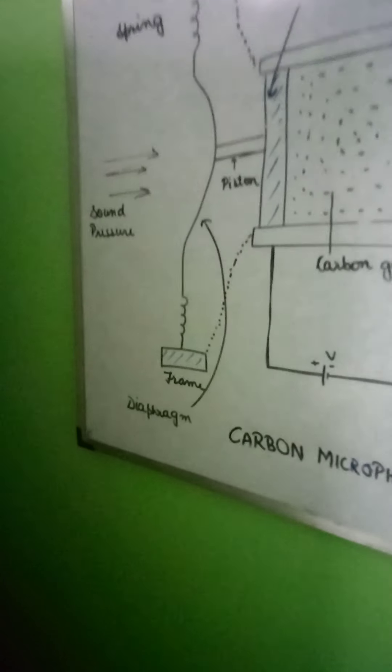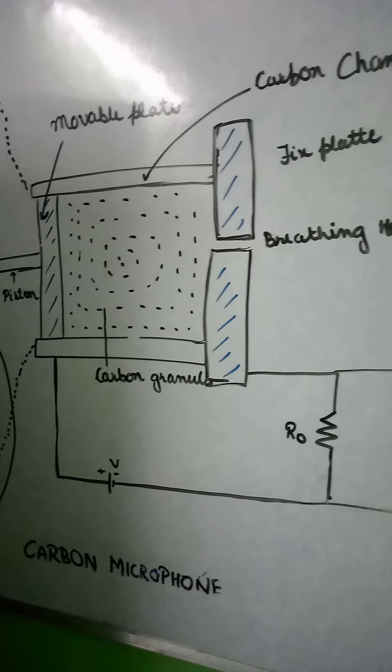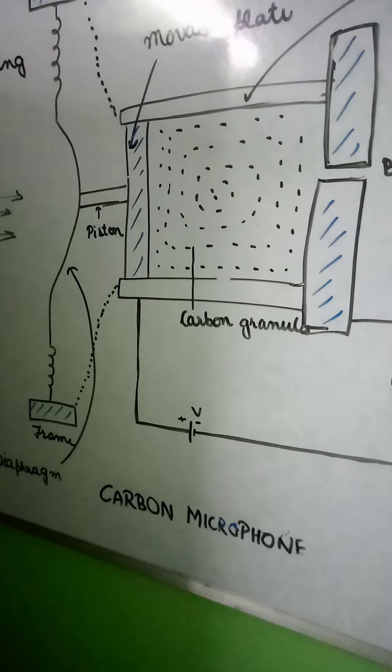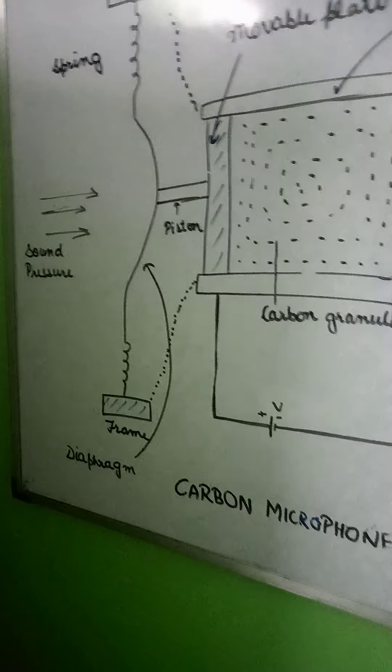This diagram shows the frame, piston, spring, movable plate, and carbon chamber. Fix plate is there, breathing hole is there, and from here we take output. So the microphone, how it converts sound frequency to electrical frequency, that circuit is shown here.